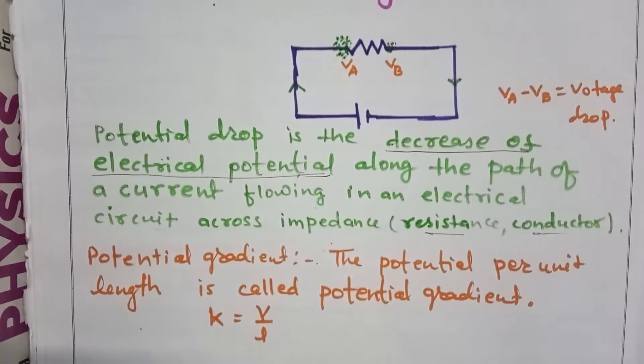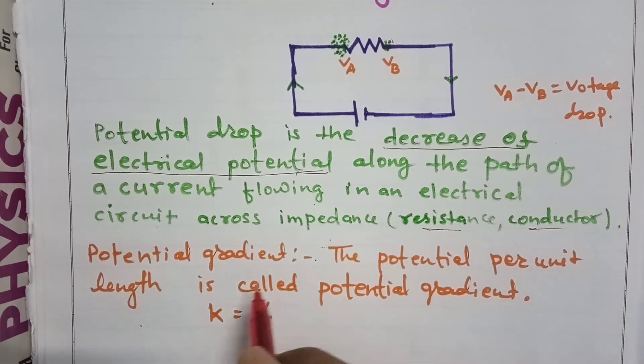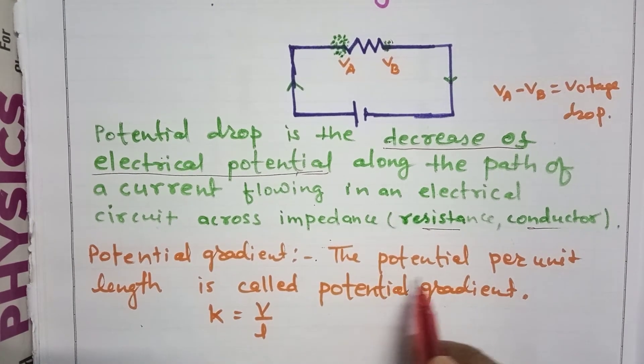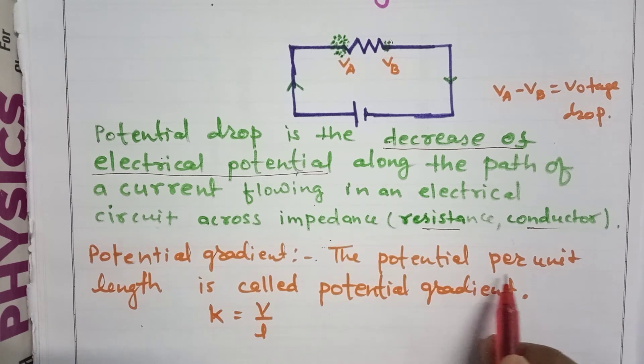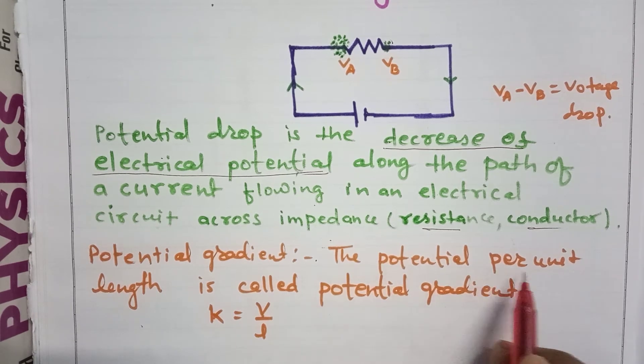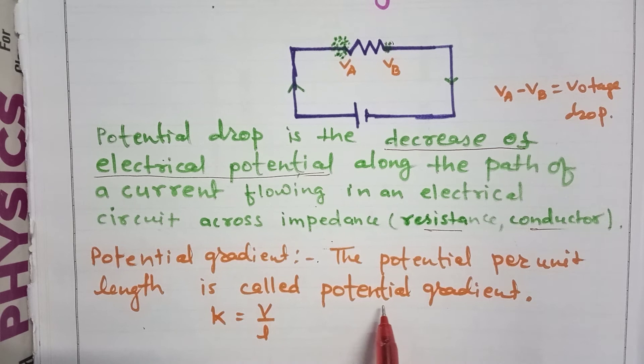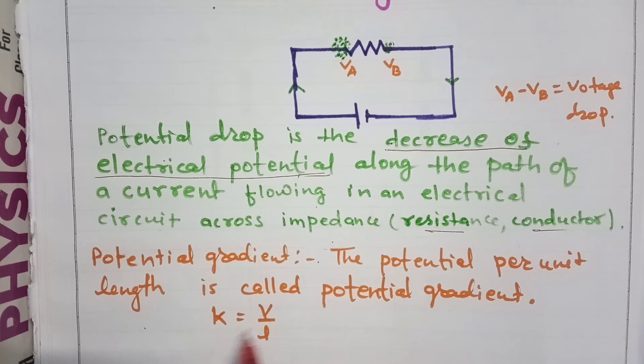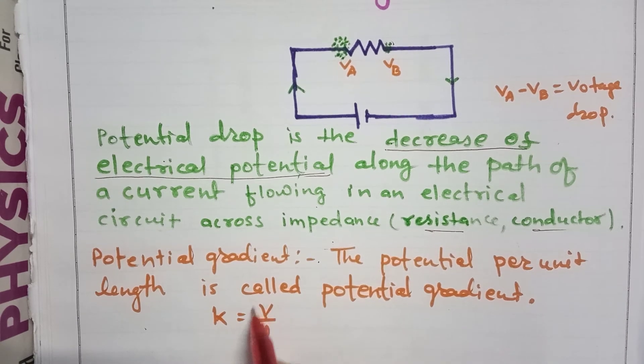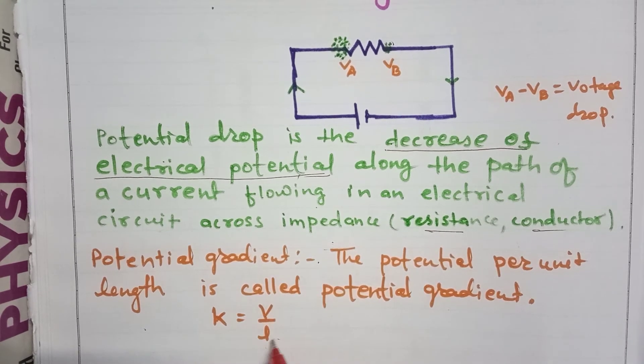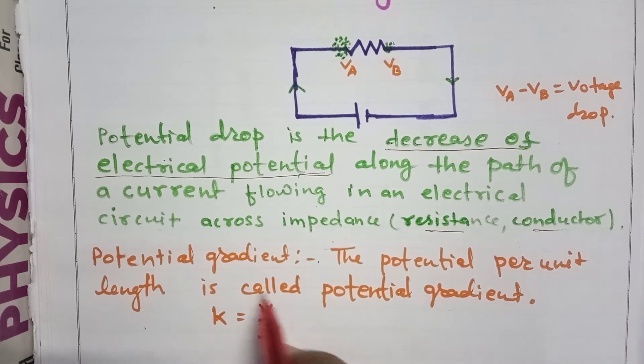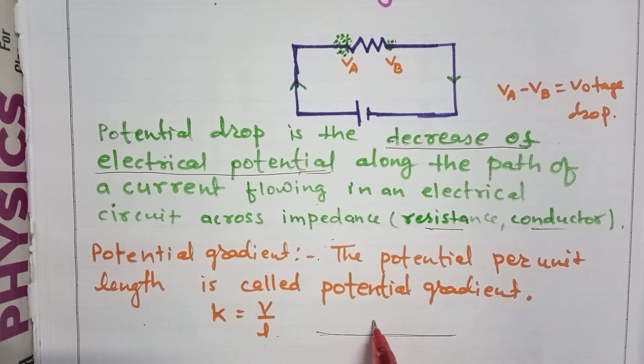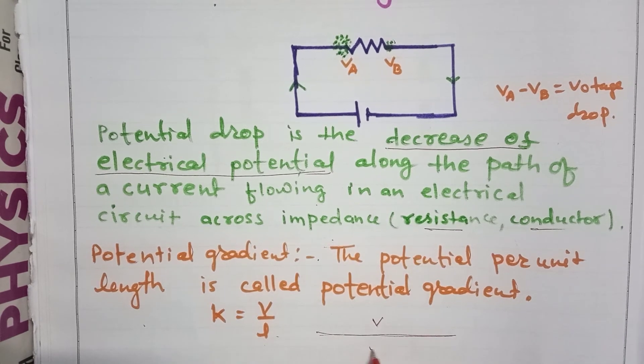Next is potential gradient. Potential drop is the decrease in potential. The potential drop per unit length is called potential gradient. We can write it as K = V/L, where V is the potential drop over length L. That's all in this video.